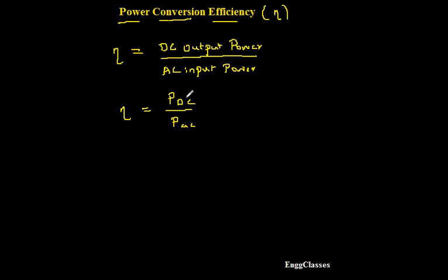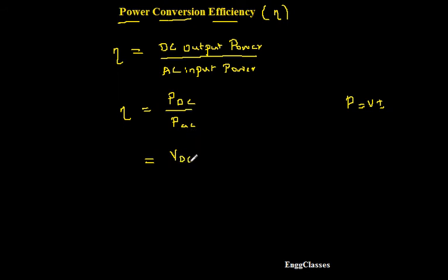I am calling it power conversion efficiency because the output is DC and the input is AC. The application of rectification is converting an AC signal into a DC signal, so at the output we have DC and at the input we have AC. Now, I can express this in terms of voltage and current — power equals V times I — so it becomes VDC times IDC divided by VAC times IAC.